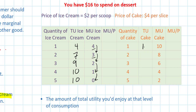The first slice of cake provided me with ten utils, so my total utility at one slice is ten. The second slice I add eight to get eighteen. The third slice I add six to get twenty-four. I add four for the fourth slice to get twenty-eight, and I add two for the fifth slice for a total utility of thirty utils for five slices of cake.